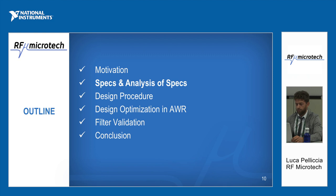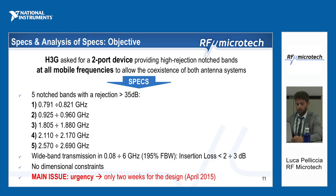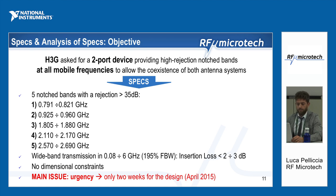I will now present the specifications and analysis, and the way we decided to implement the device. One mobile service provider, H3G, asked us at RF Microtech for a two-port device providing high rejection notched bands at all mobile frequencies to allow coexistence of both antenna systems. You can see the specifications here — there are five notched bands with a rejection of at least 35 dB.